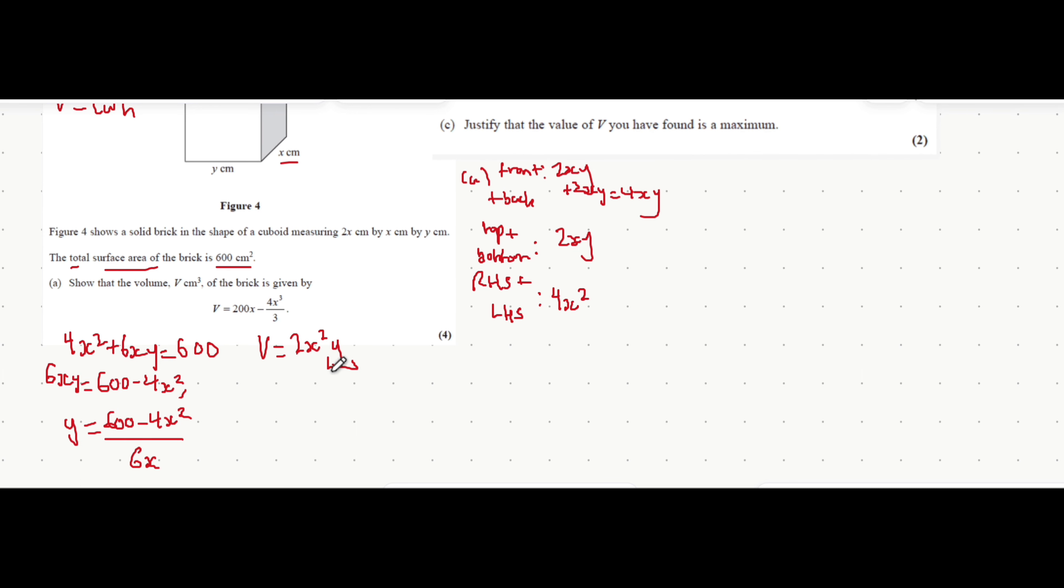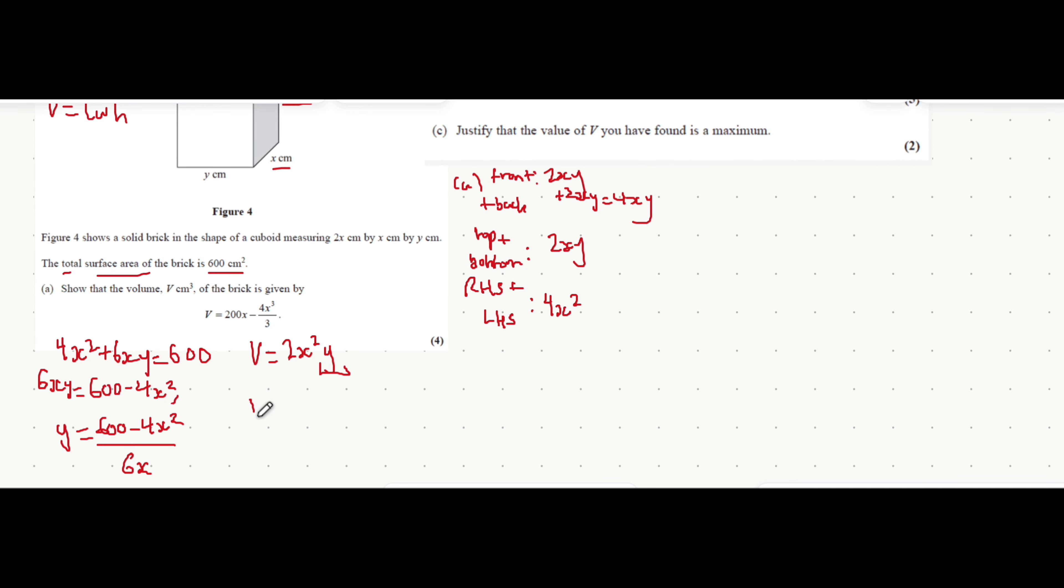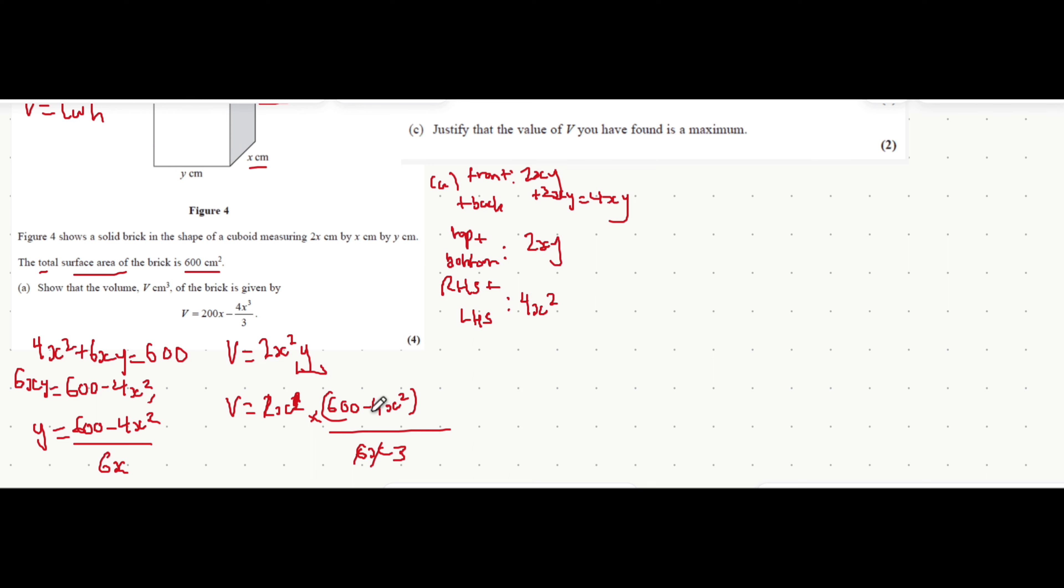Once you've got that equation of y you can now put it into this equation here and we get that the volume is 2x squared multiplied by everything that we found y was equal to, so 600 minus 4x squared. I'm going to put this in a bracket because you're multiplying 2x squared to all of this, all divided by 6x. This x cancels out with one of these powers of x. 2 cancels out with 6 to create 3 on the bottom, and we're left with x multiplied by all of this.